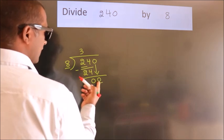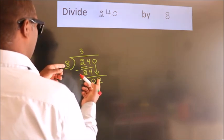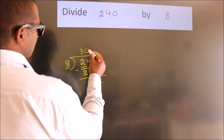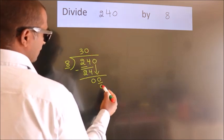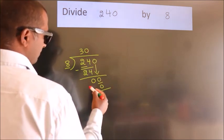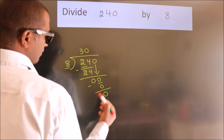When do we get 0? In 8 table. 8 times 0, 0. Now we subtract. We get 0.